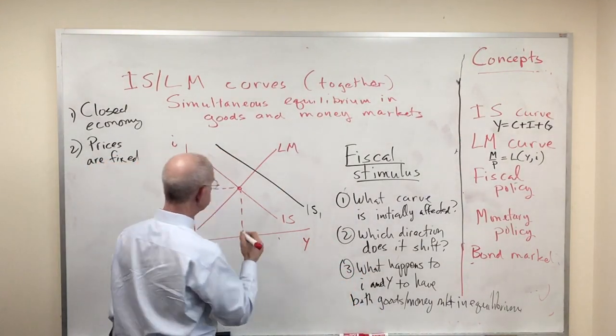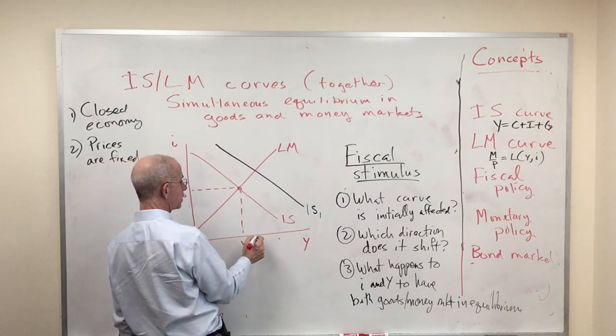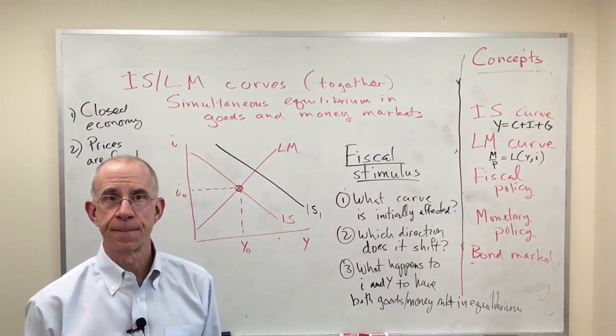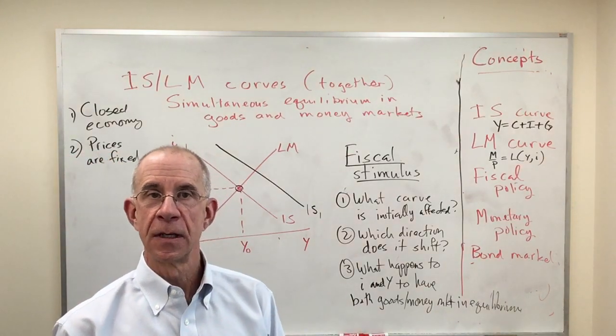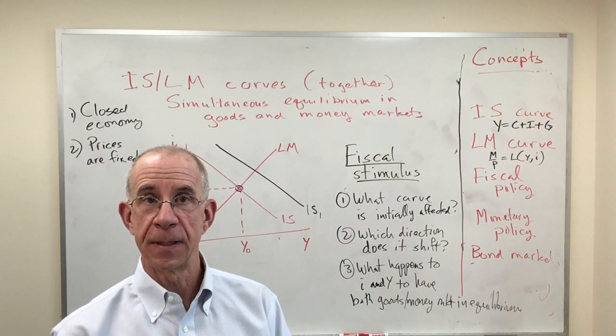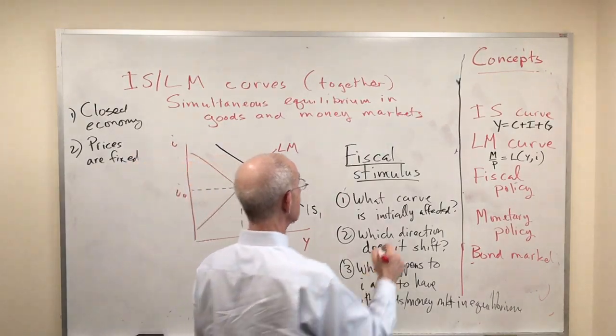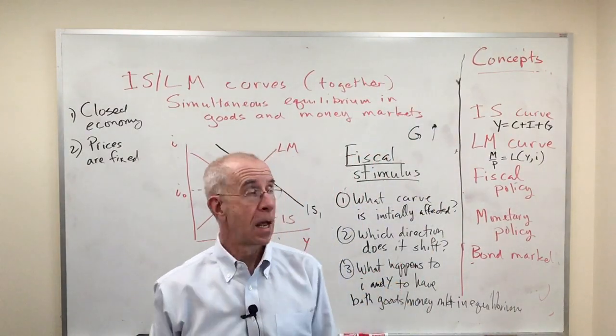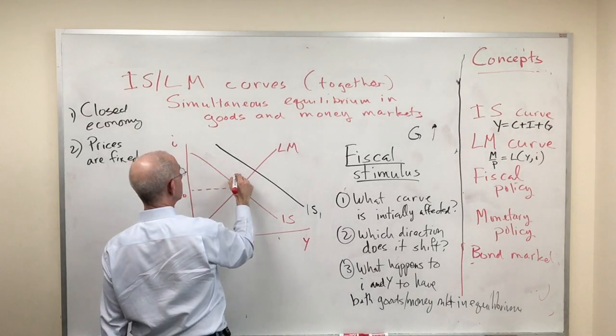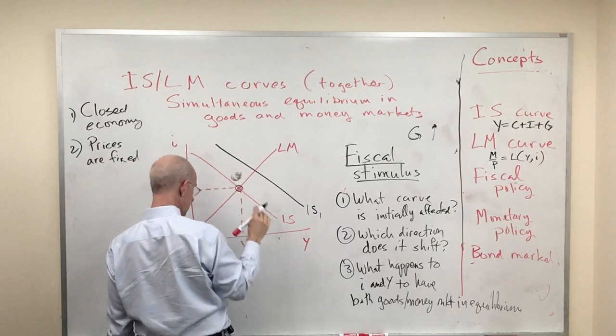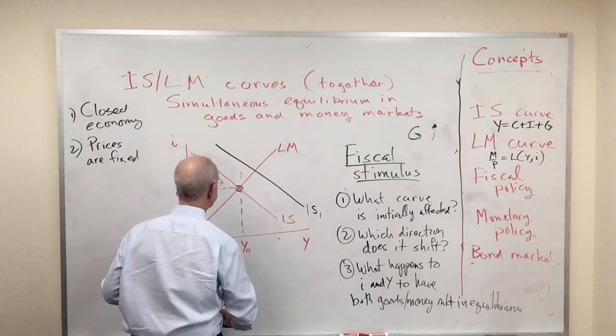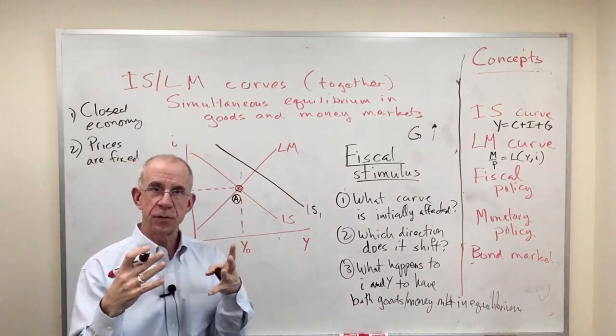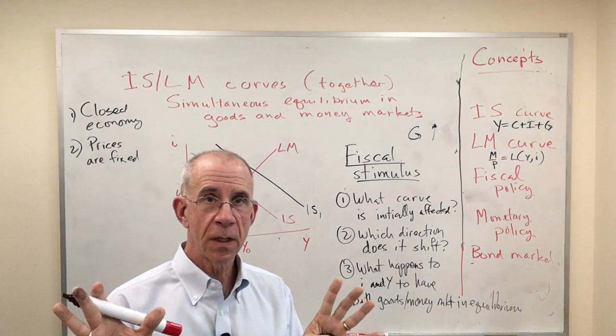So let's imagine that we start, the IS curve shifts out and we start with this initial level of interest rates and output. Now, what you've got is an increase in aggregate demand because, let's say that this was an increase in government spending. Okay, that point A, the initial combination of interest rates and output doesn't cut it anymore. You've got more demand.